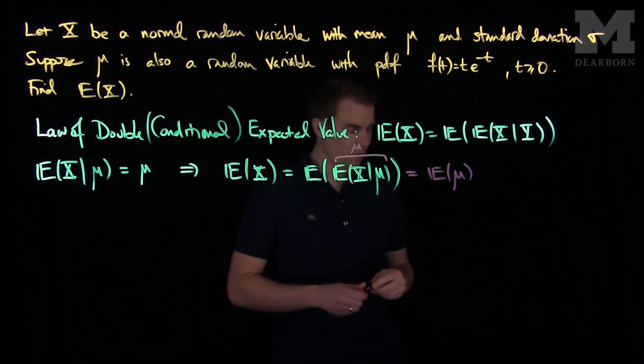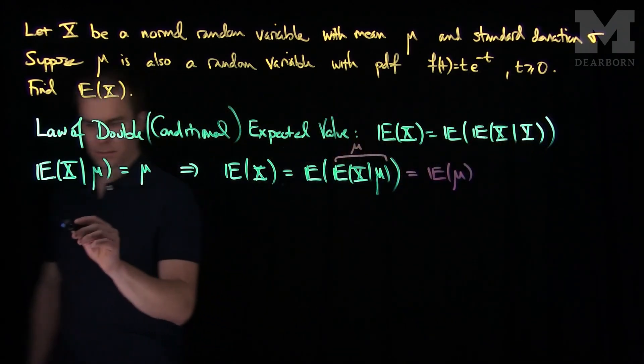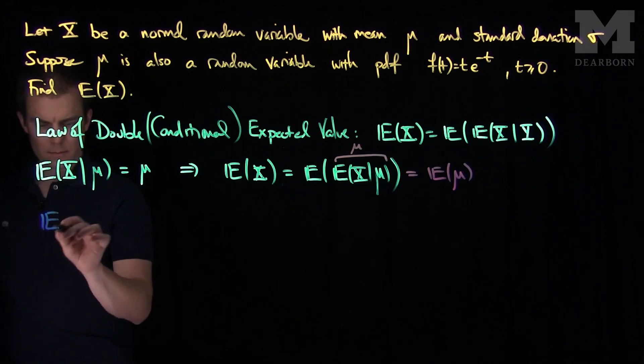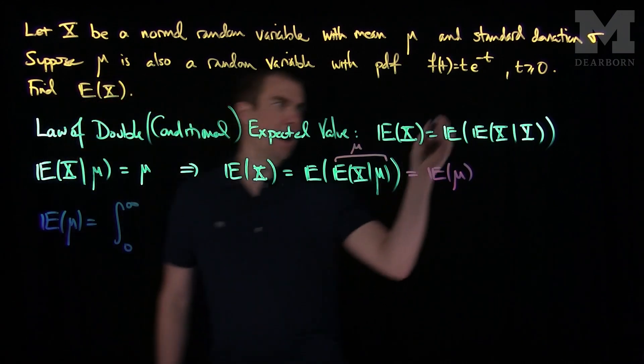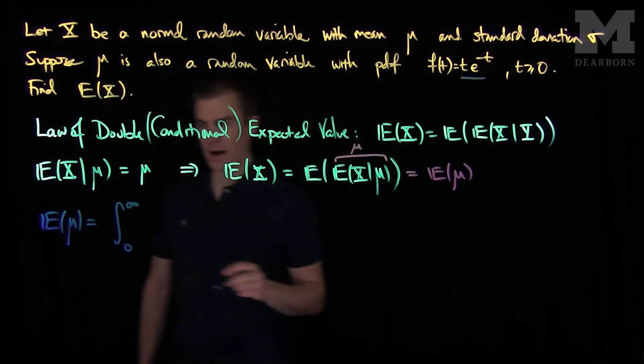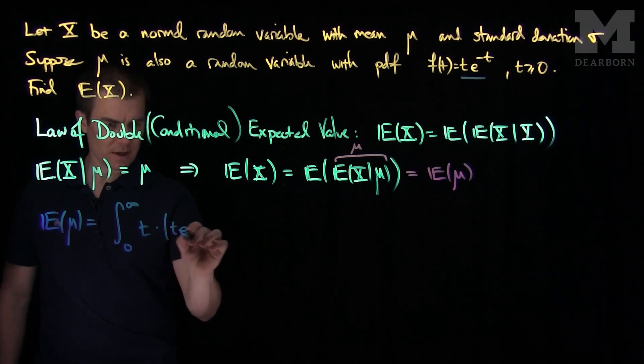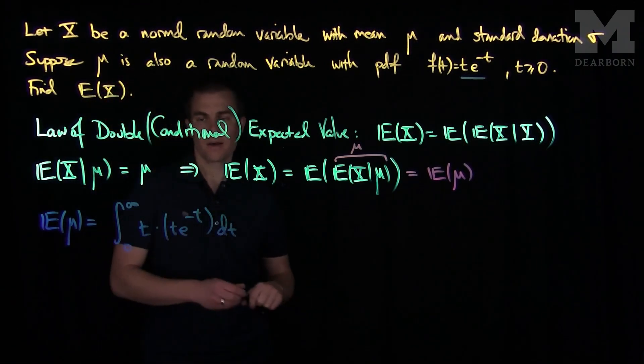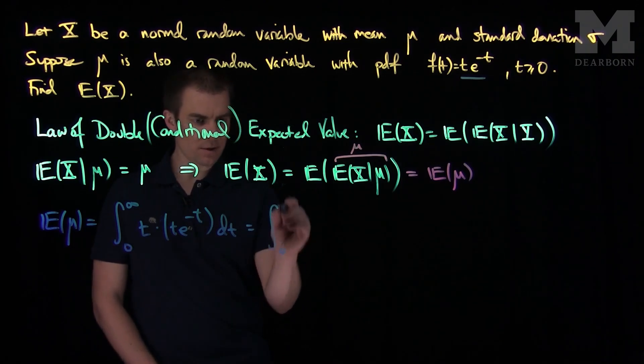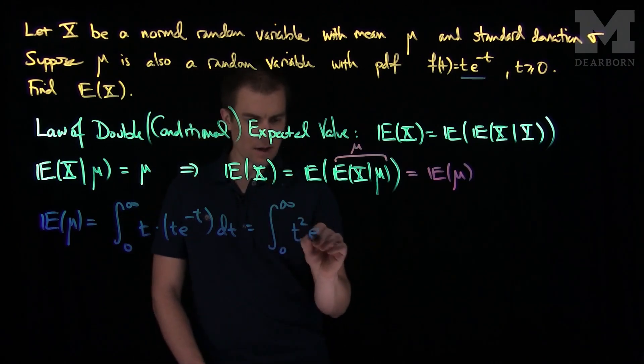Now to compute the expected value of the random variable μ we can use this formula. So the expected value of μ is the integral from zero to infinity, I multiply the pdf by t. So I have t times t·e^(-t) dt. And so what we have here is the integral from zero to infinity of t²·e^(-t) dt.